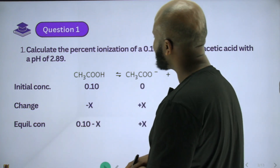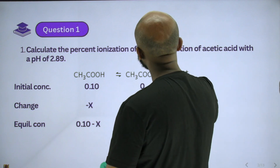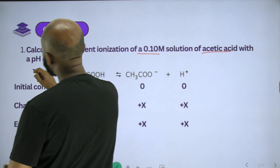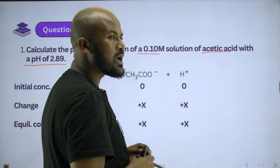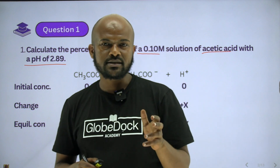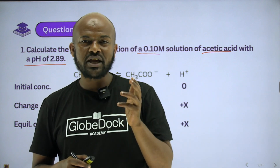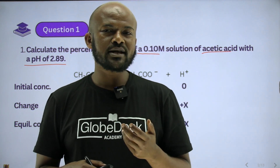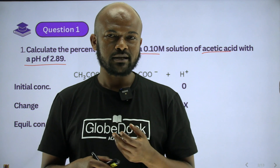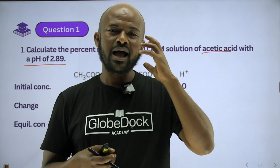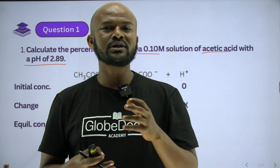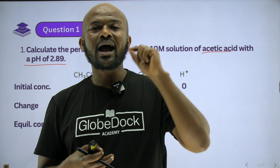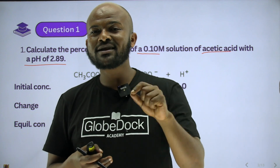Of a 0.1 molar solution of acetic acid with a pH of 2.89. Okay? So if you see the pH, it is going to give us the hydronium ion concentration. If you see the hydronium ion concentration, you can determine the effect of the hydronium ion concentration.